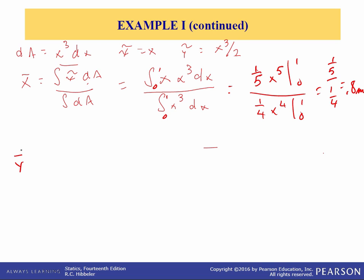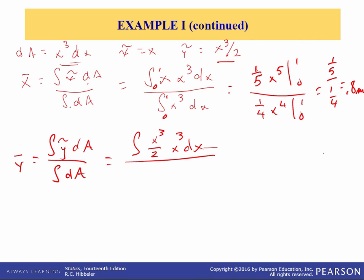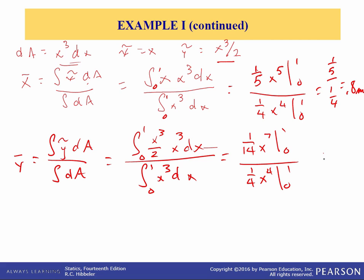To solve for y-bar, the equation is the integral of y-tilde dA divided by the integral of dA. y-tilde is x cubed over 2, so the numerator is the integral of (x cubed over 2) times x cubed dx from 0 to 1, divided by the integral of x cubed dx from 0 to 1. This comes out to be one-fourteenth times x to the seventh power, evaluated from 0 to 1, divided by one-fourth x to the fourth, evaluated from 0 to 1. So y-bar equals one-fourteenth divided by one-fourth, which is 0.286 meters.